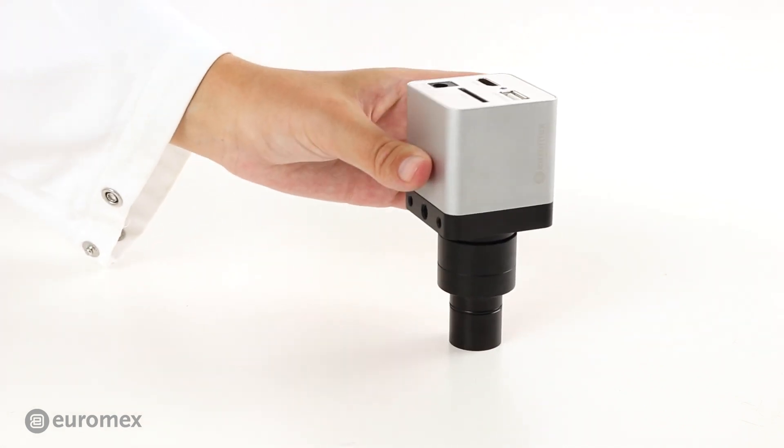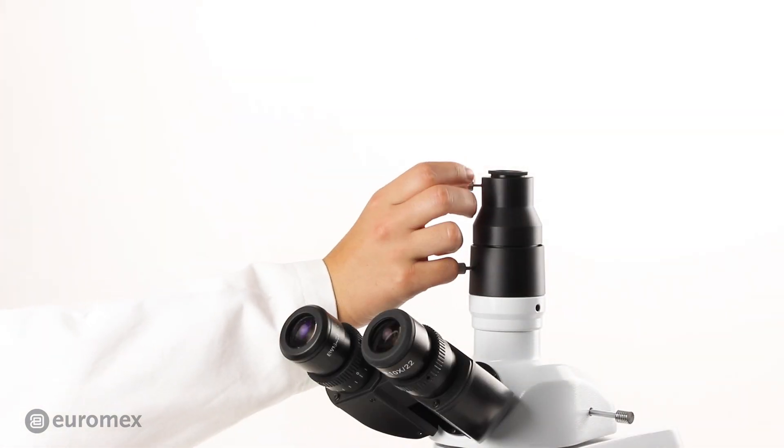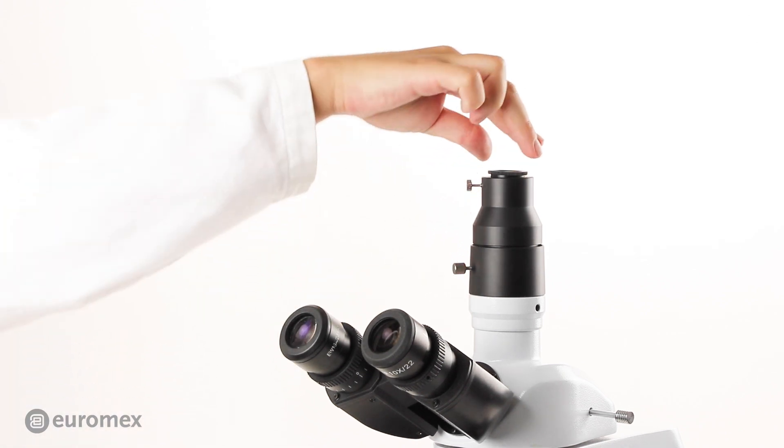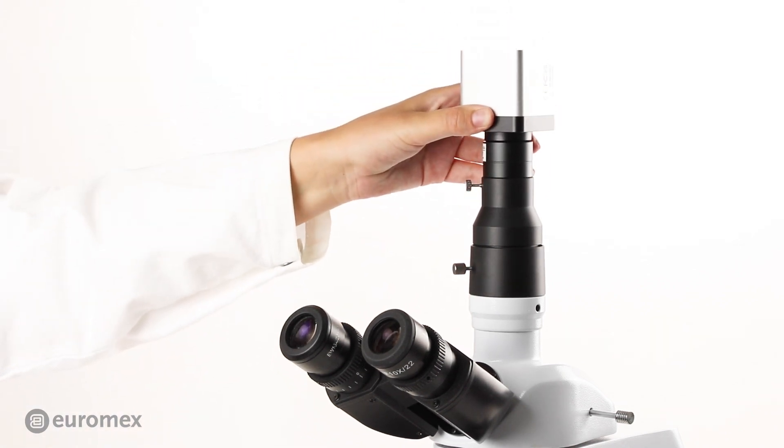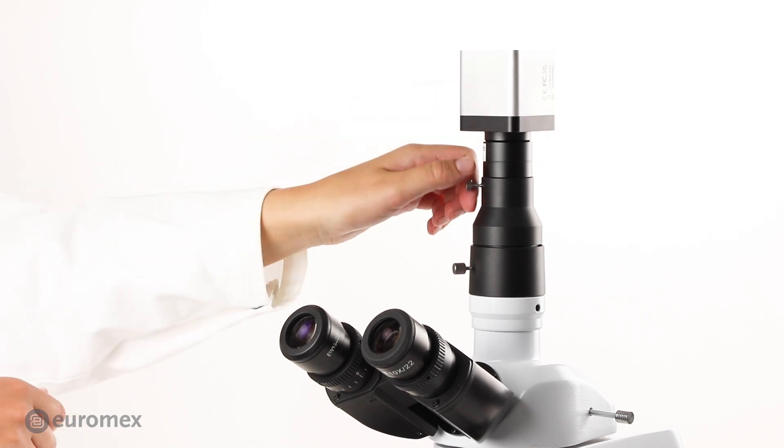How to proceed with an adjustable trinocular tube: Put the camera with C-mount adapter in the adjustable trinocular tube and fixate with the screw.